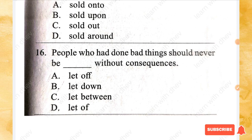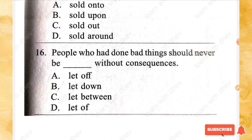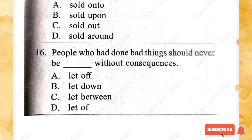Question 16: People who had done bad things should never be _____ without the consequences. Options: let off, let down, let between, let off. The right answer is option A — let off.